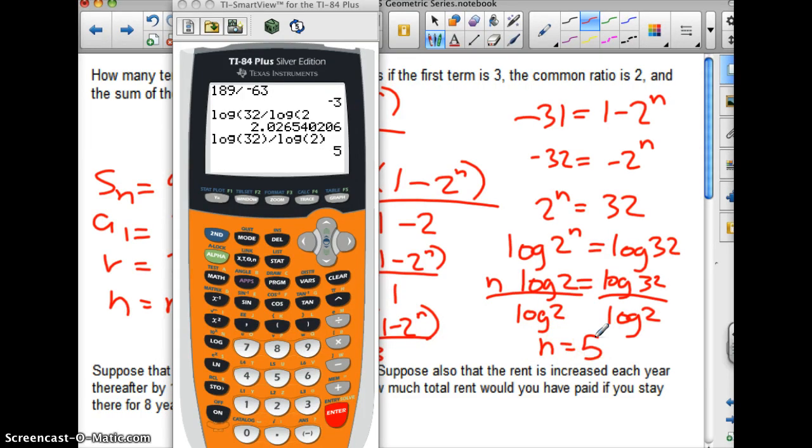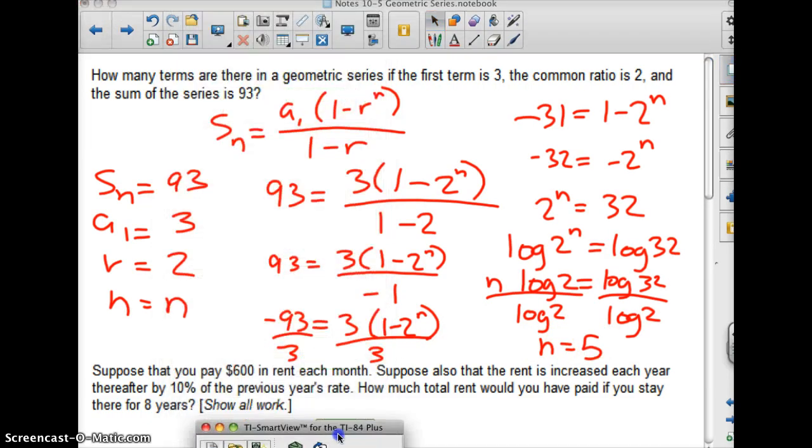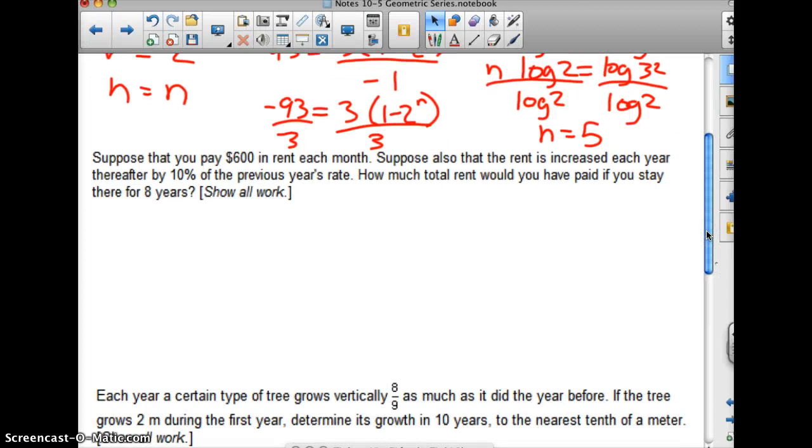So now I've got n equals 5. N equals 5. Now let's just go back, reread, make sure I answered the question they asked. How many terms are there? Five terms. Yep. That's good. N equals 5 is my answer. I think we kind of denote that somehow. That's my answer.